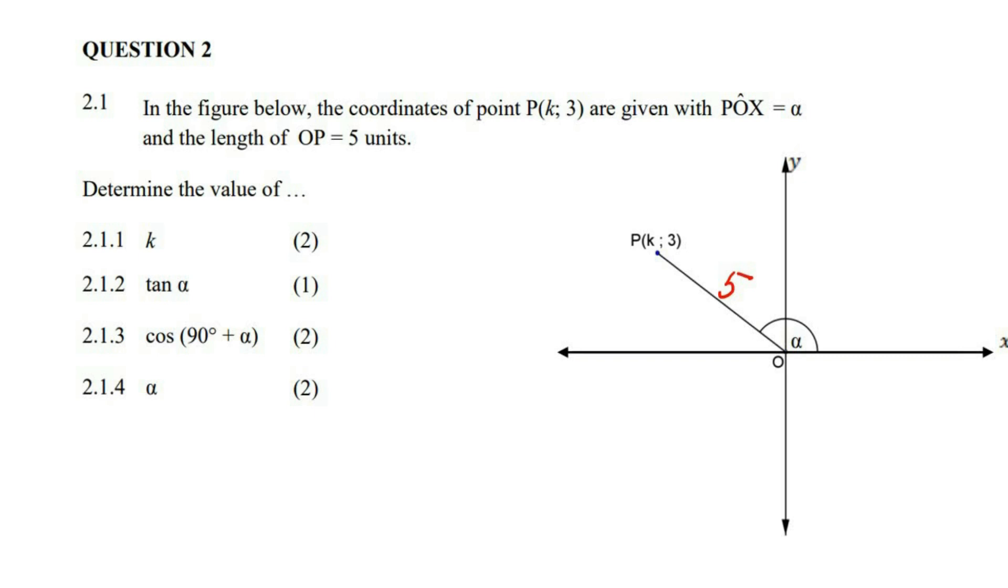The first question says, determine the value of k. What you need to understand is that at this little point over here, we can do the following. Imagine this line didn't exist and there was no 5 over there. Then think about this.